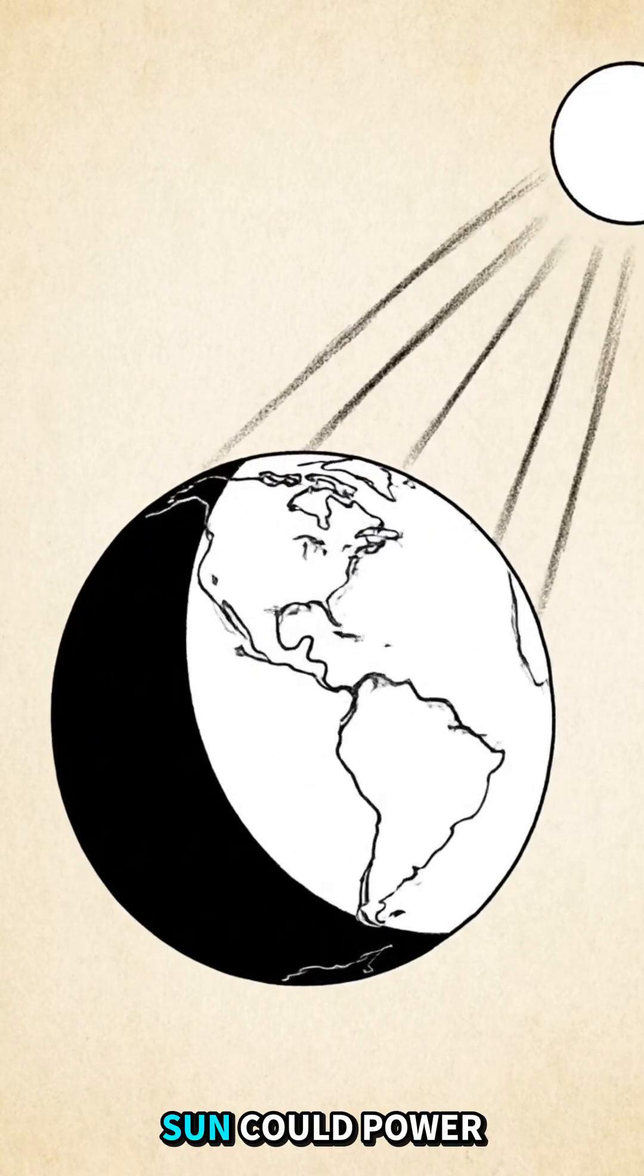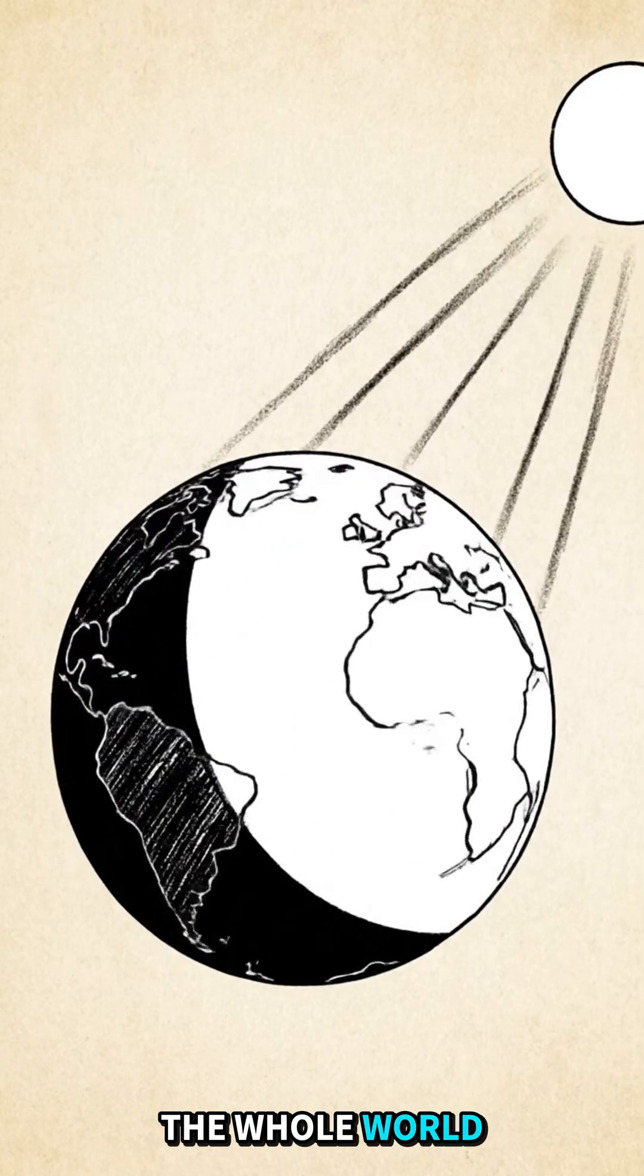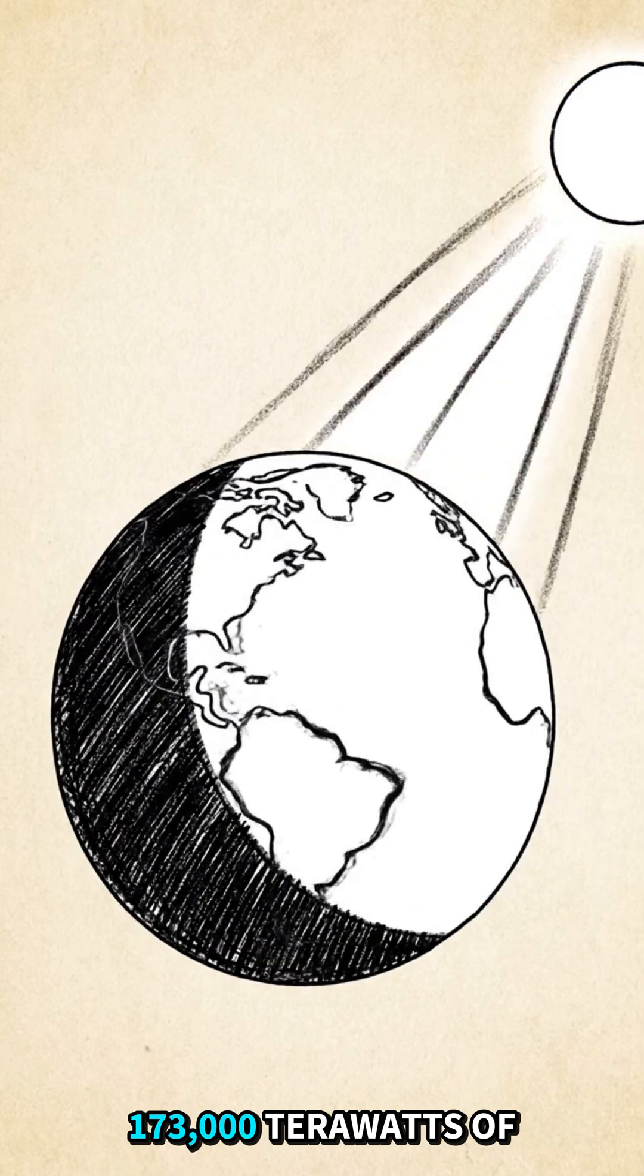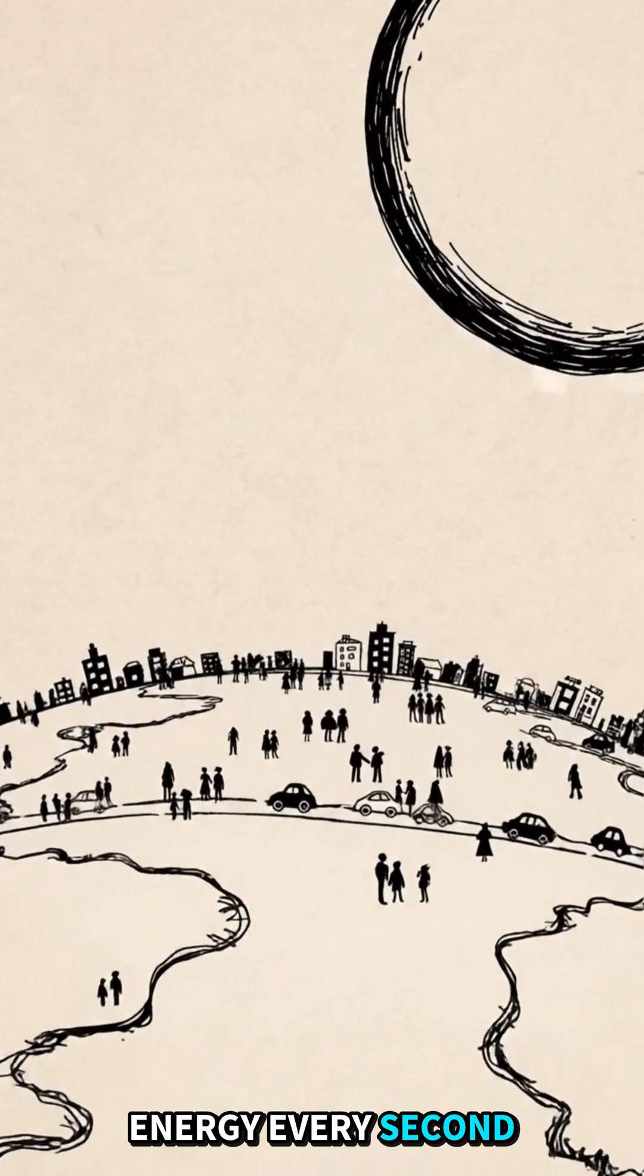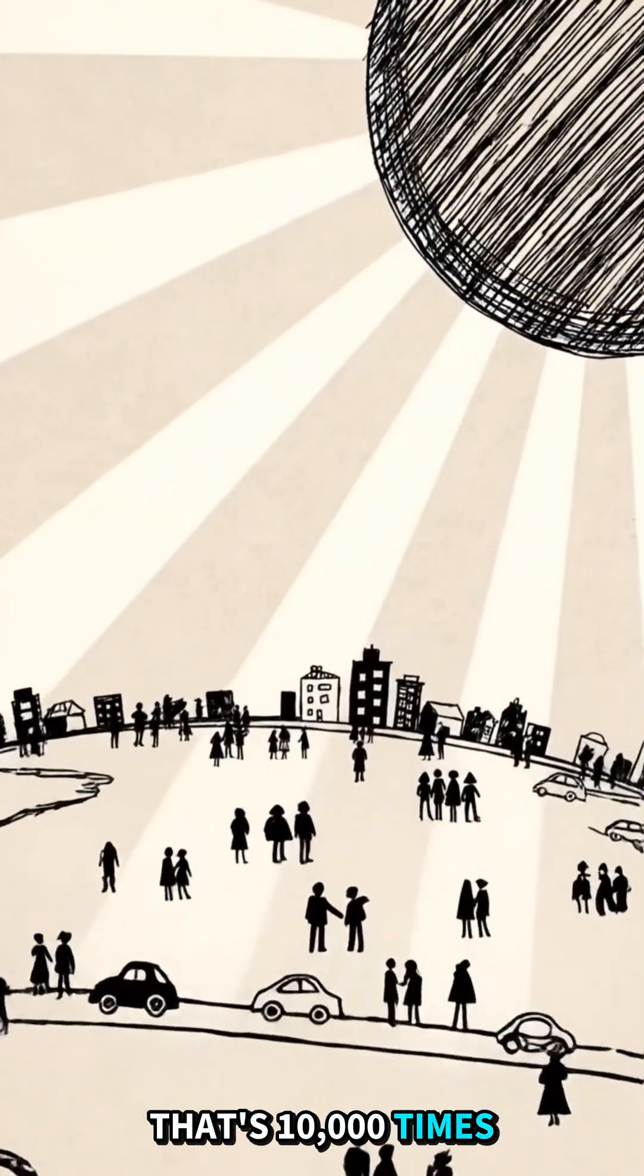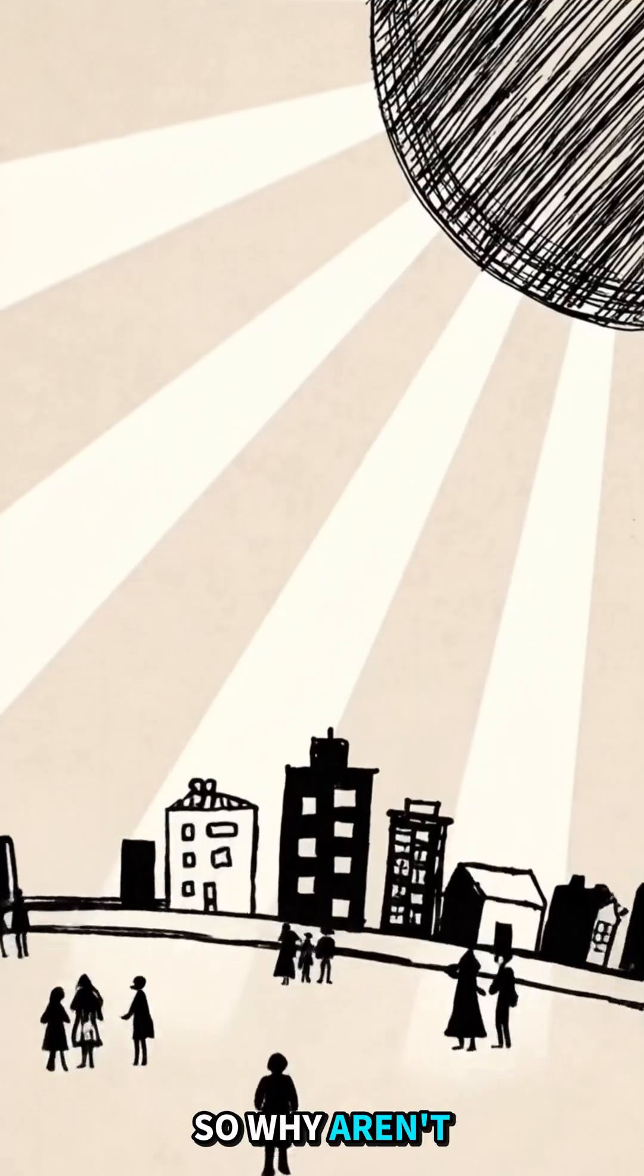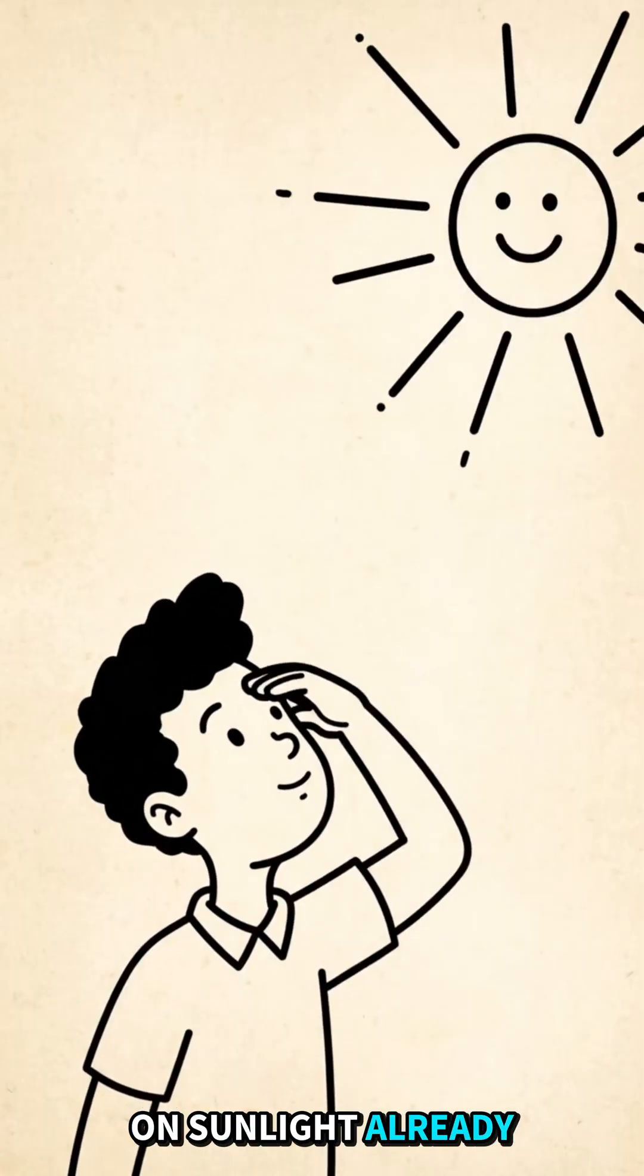Have you ever wondered if the sun could power the whole world? It gives us 173,000 terawatts of energy every second. That's 10,000 times more than what we use. So why aren't we running everything on sunlight already?